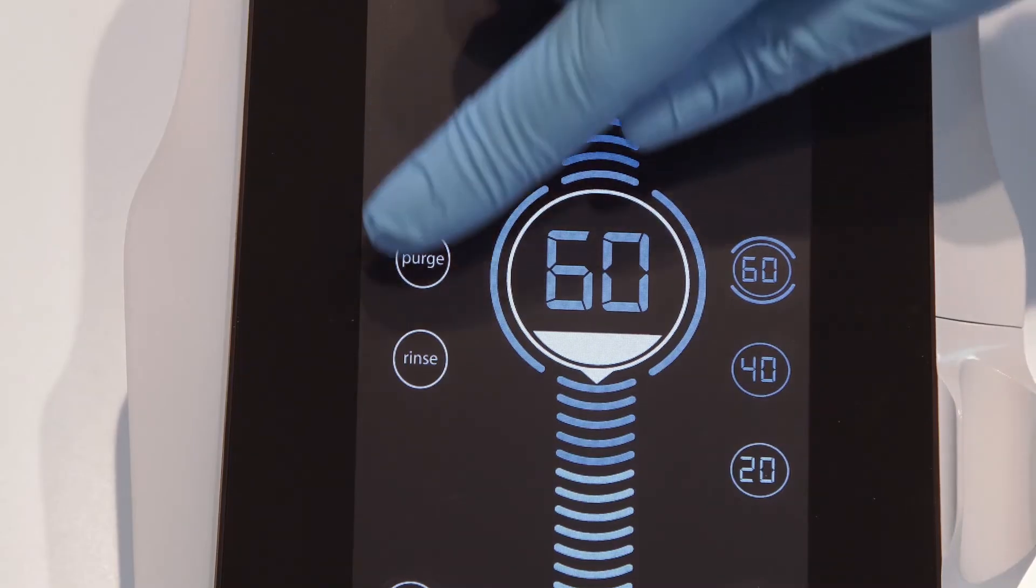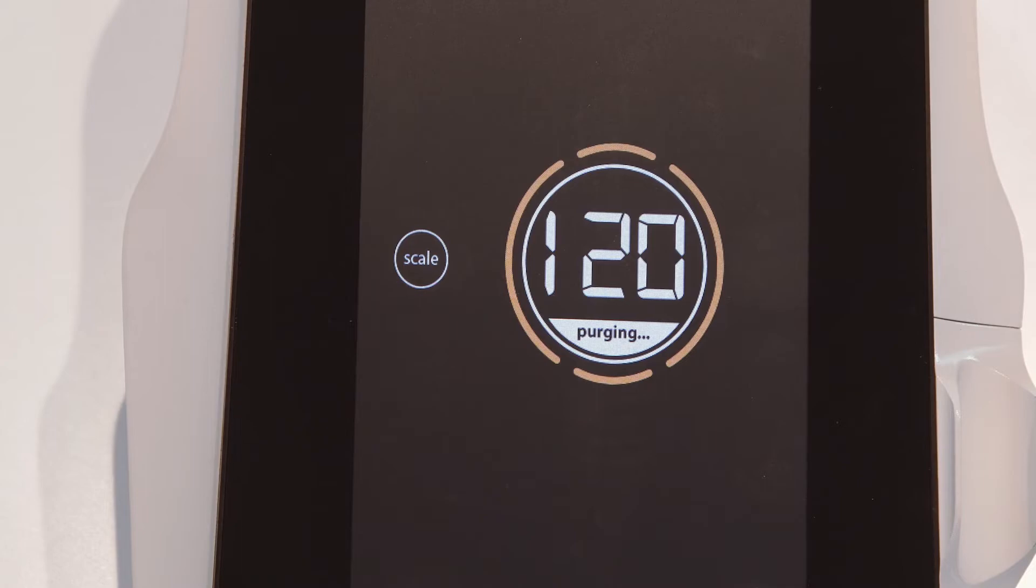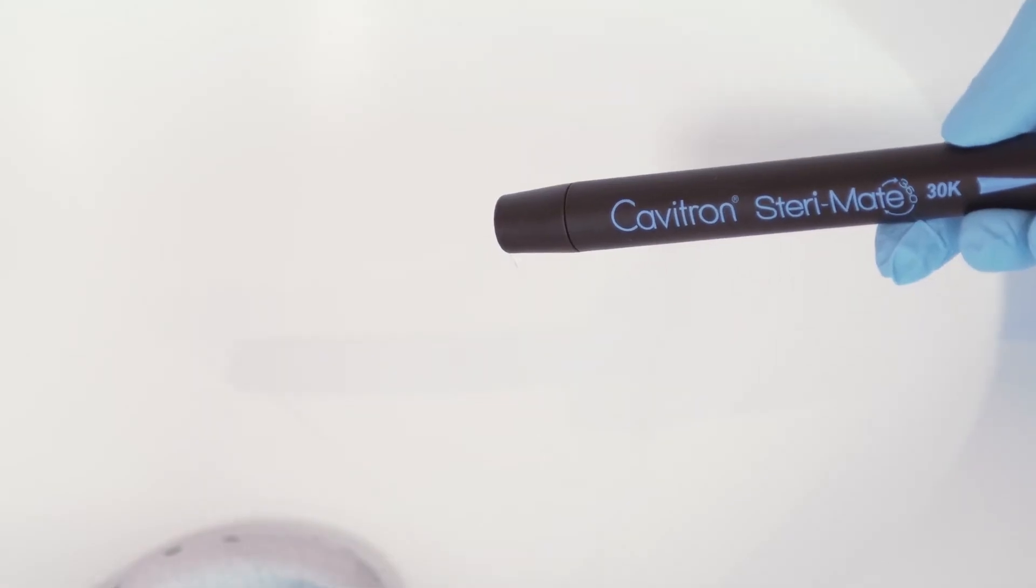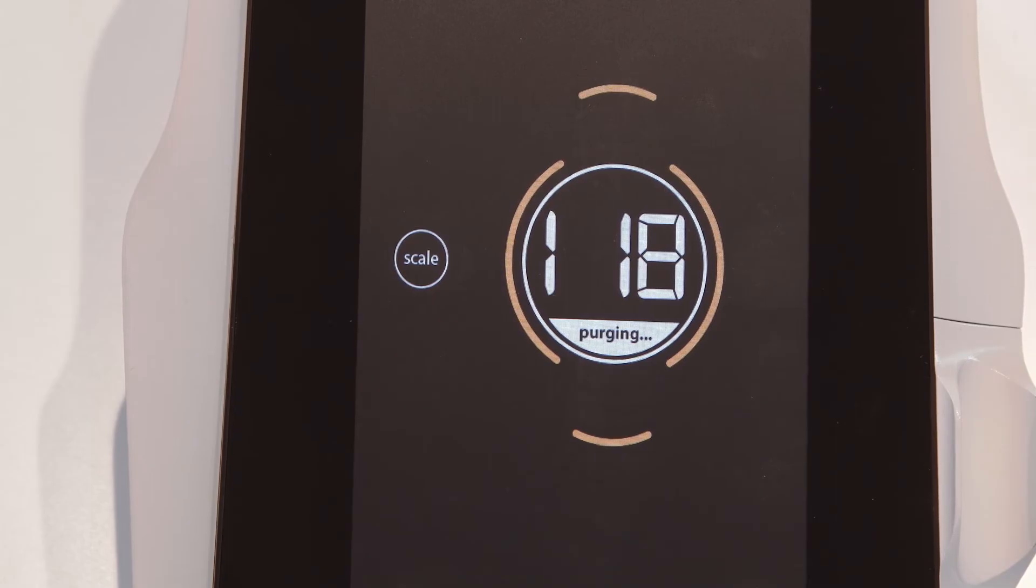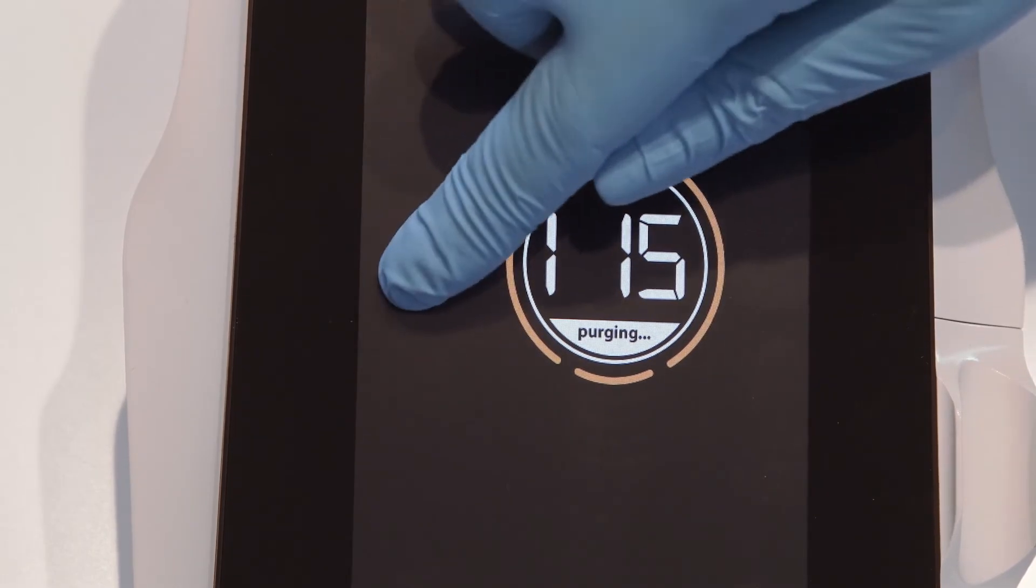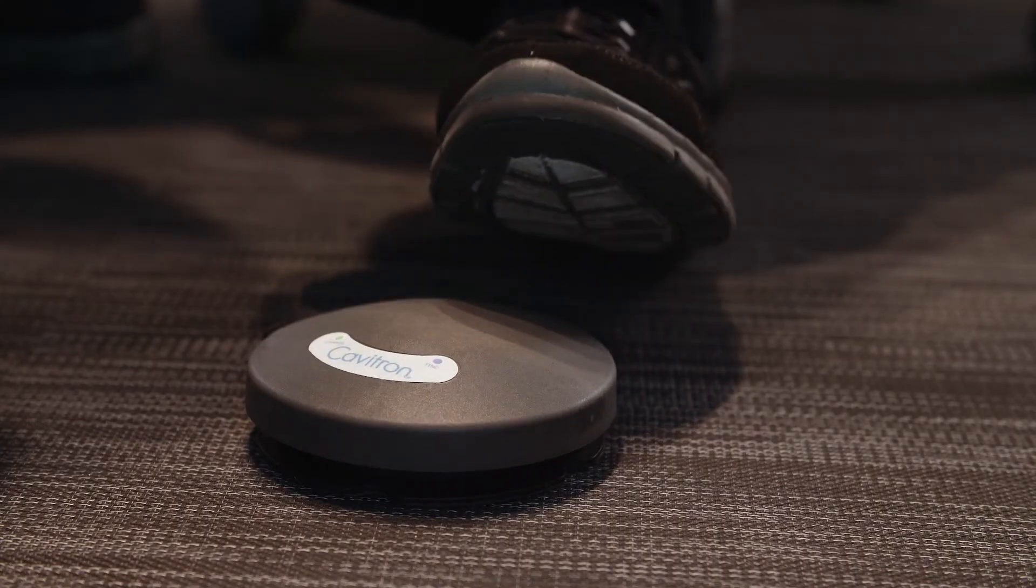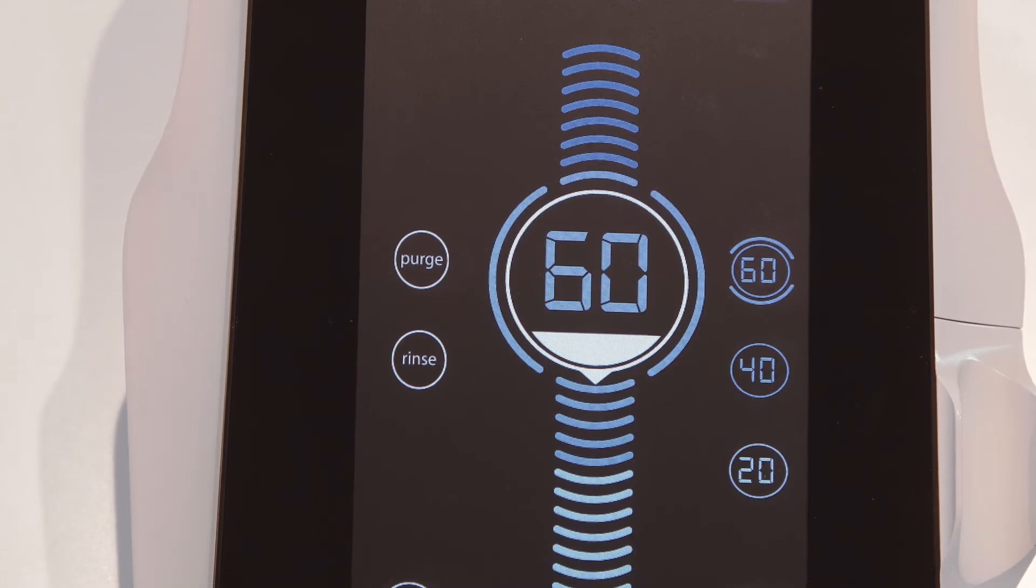This setting is used to flush the water lines at the beginning of the day or between patients. Purge will run automatically for two minutes, and adjustments can be made for maximum water flow with a countdown in seconds shown on the screen. Press the scale button to return to the main screen, or simply tap the foot pedal. After a two-minute countdown, it will then return to the main screen.